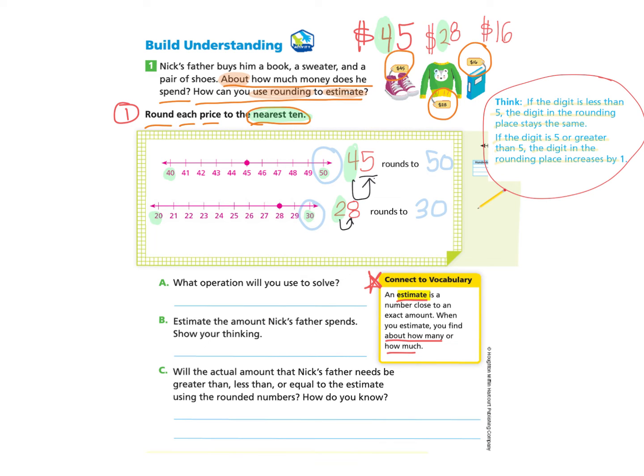Nick's final item is the book that is $16. I notice that the tens column is a 1, so I know I'm going to make a number line from 10 to 20 and place the 16 on the number line. If you would like to pause this video and try that and come back, you're welcome to do that.